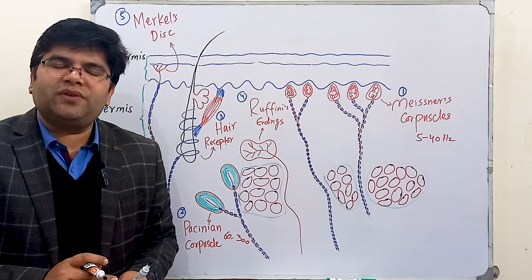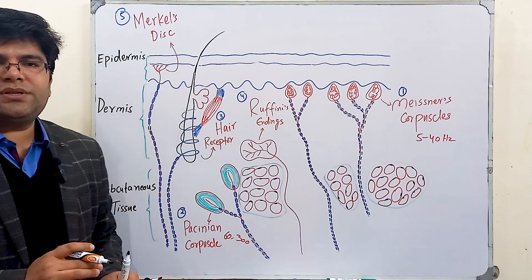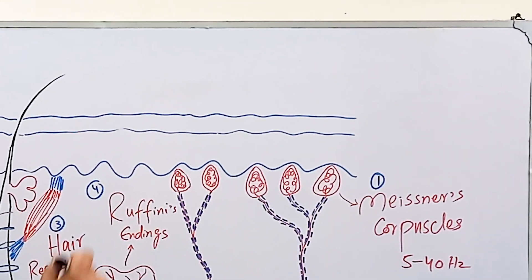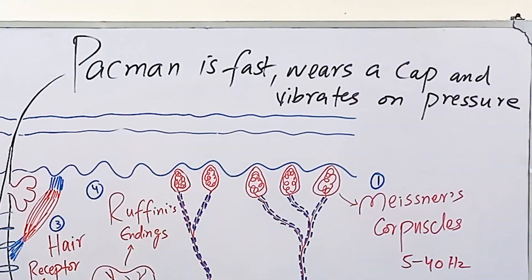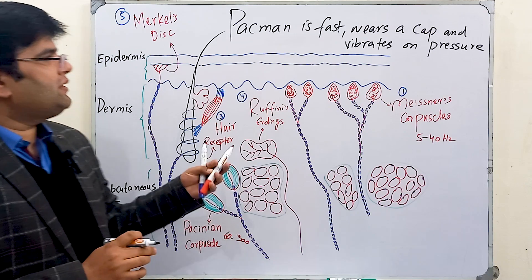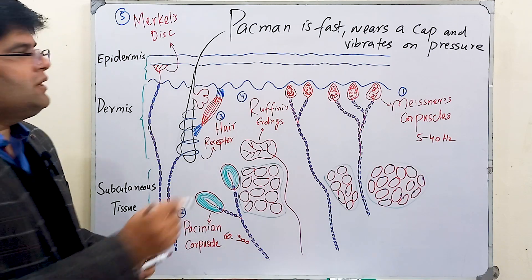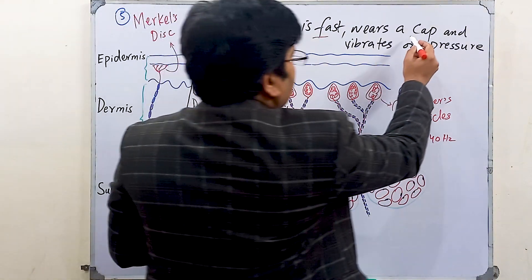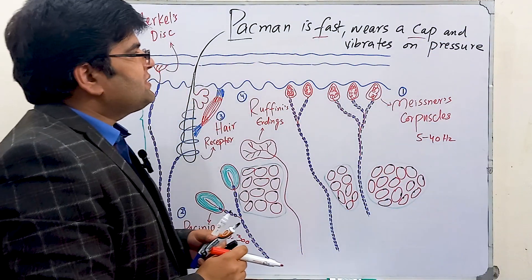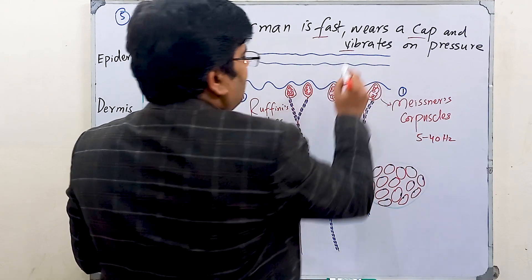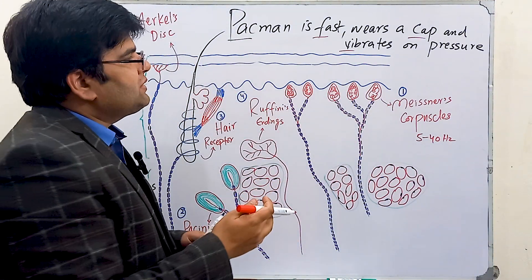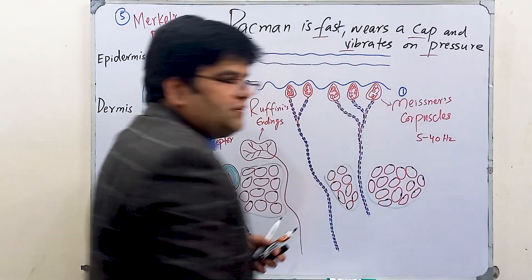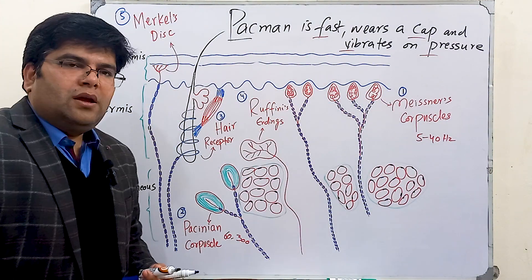The mnemonic to remember the features of Pacinian corpuscles is: 'Pacman is fast, reads a cap, and vibrates on pressure.' 'Pacman' is for Pacinian corpuscle, 'cap' is for encapsulated receptor, 'vibrates' is for detecting vibrations, 'fast' is for rapidly adapting receptor, and 'pressure' is for deep pressure.